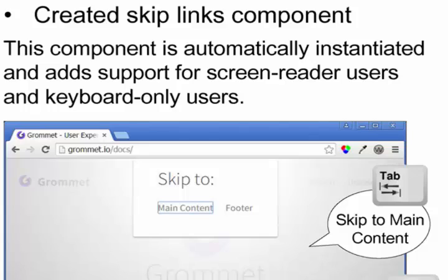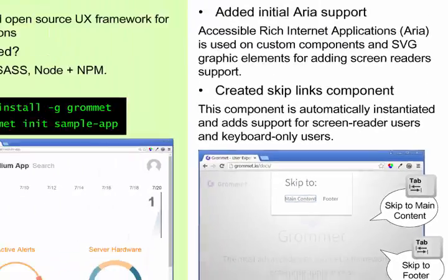Finally, we created a skip links component, which allows screen reader and keyboard-only users to skip the repetitive content that's usually at the beginning of a page, such as headers and navigation bars. This component comes by default on Gromit applications and the developer only needs to point to where the main content is on the page.